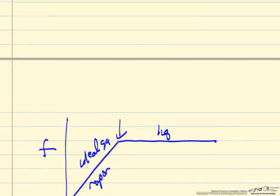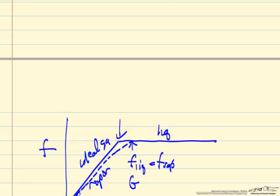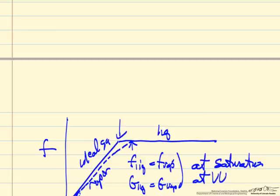And then for real gas, this would of course not be a straight line, and it would start down here close to ideal gas and it might deviate something like so. Again, fugacity of the liquid equals fugacity of the vapor. The Gibbs free energy of the liquid equals the Gibbs free energy of the vapor at saturation conditions, at vapor-liquid equilibrium.